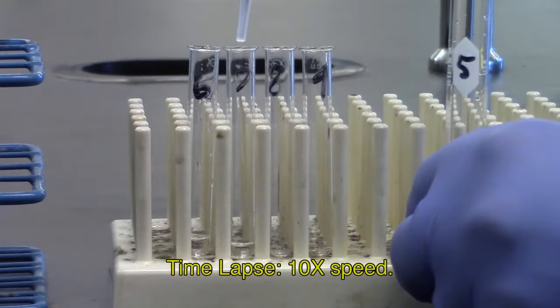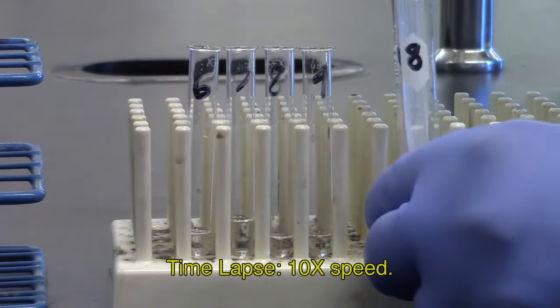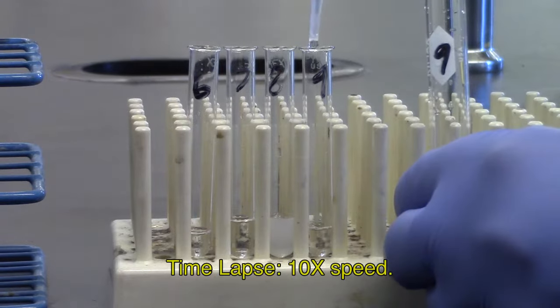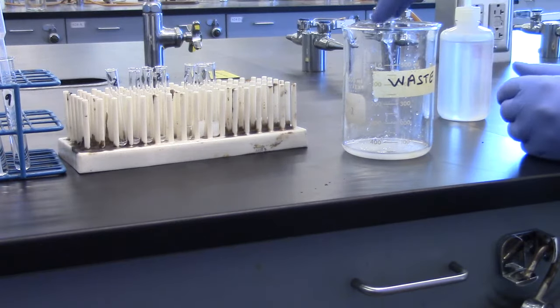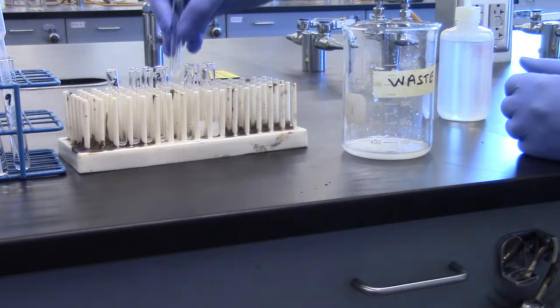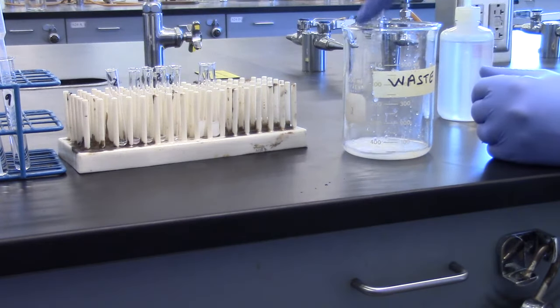For round five, we mix number five, barium chloride, with numbers six to nine. Remember, this round must also have all solutions discarded in the waste beaker and not the sink.